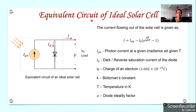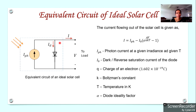First of all, let us see the equivalent circuit of an ideal solar cell. An ideal solar cell means a solar cell that has no losses, and therefore no resistances in the equivalent circuit. The equivalent circuit of an ideal solar cell can be represented as a current source in parallel with a diode. This current source is denoted as IPH, which represents the photon generated current.